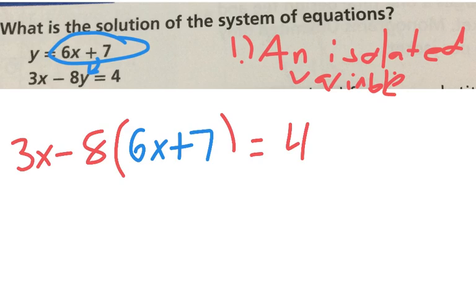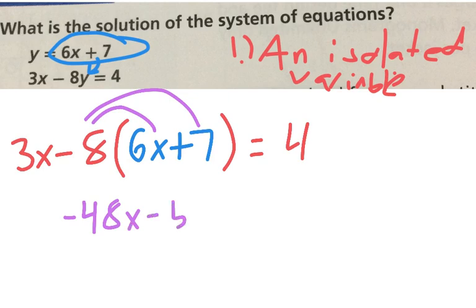So first things first, there's one x stuck in parentheses. So let's get it out by distributing. Negative 8 times 6x is negative 48x. Negative 8 times 7 is negative 56. And bring down your other terms.